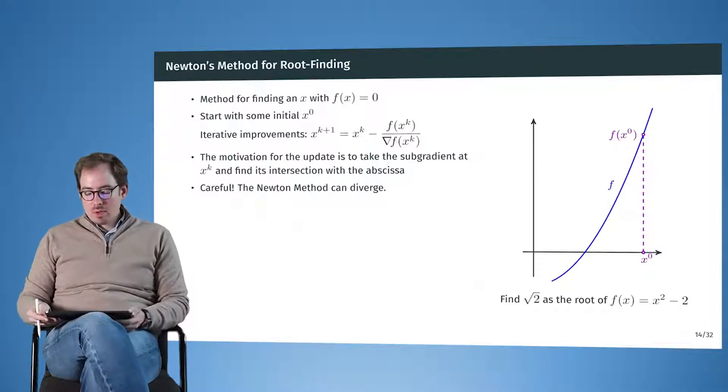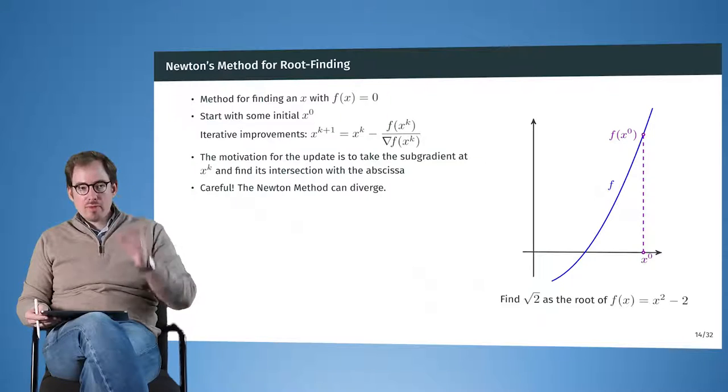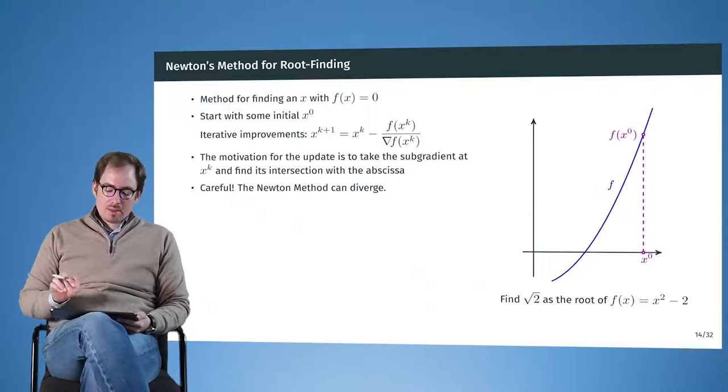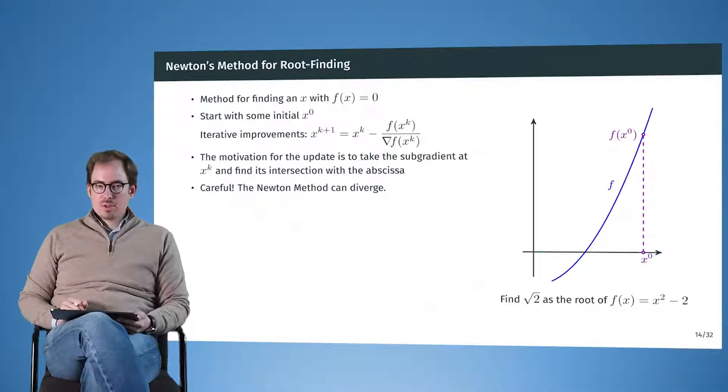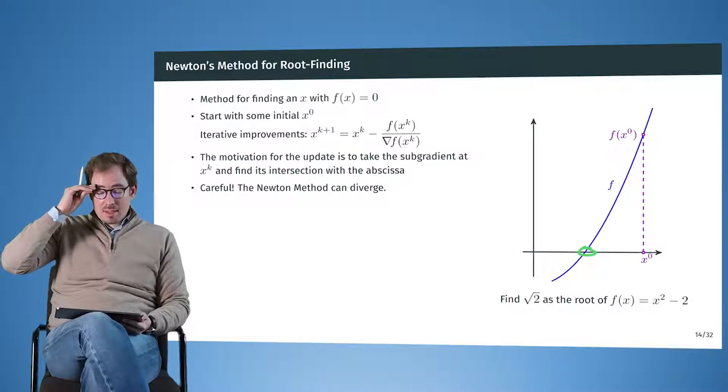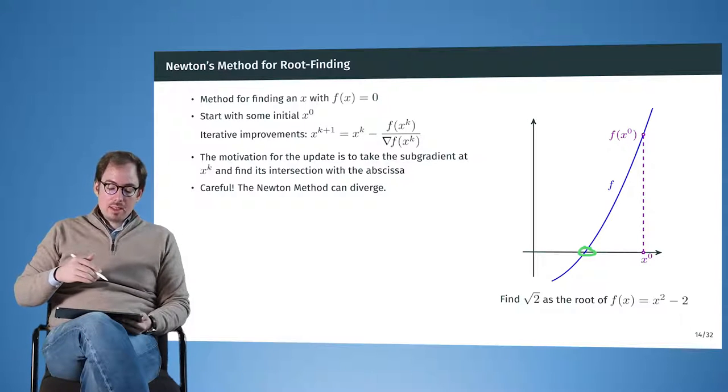Now, if we are looking for a point where a function becomes zero. This is something that people hundreds of years ago have already thought about, and the canonical method to do so is Newton's method. So this is also called root finding, so for a function to find exactly where it is intersecting with the abscissa and where the function becomes zero. And what Newton's method does,